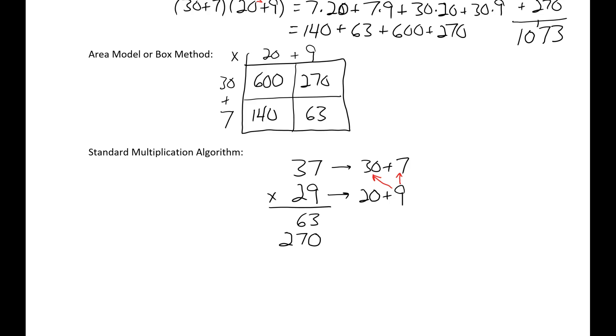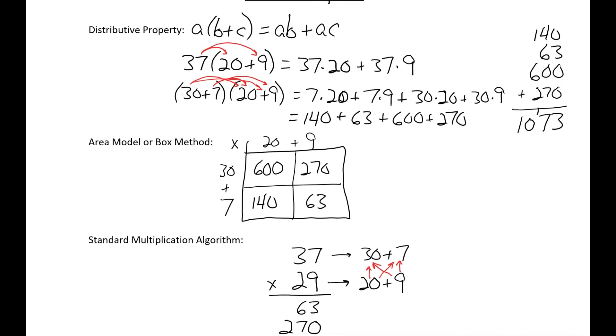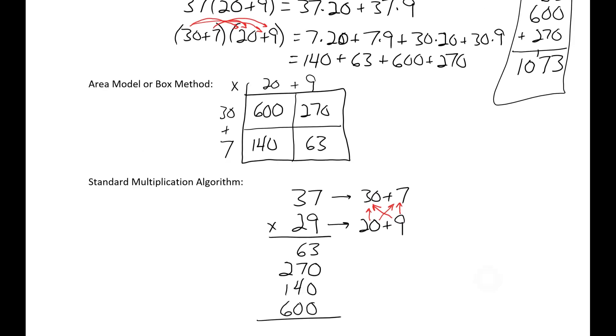Next, I'm going to multiply the 20 times the 7 and the 20 times the 30. So 20 times 7 is 140. 20 times 30 is 600. And again, notice these are the same numbers that we got when we used the distributive property. I'm just going to add them up.